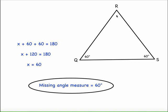On a side note, if I have all three angles that are the same measure or all 60 degrees, this is what we call equiangular, meaning all angles are equal.